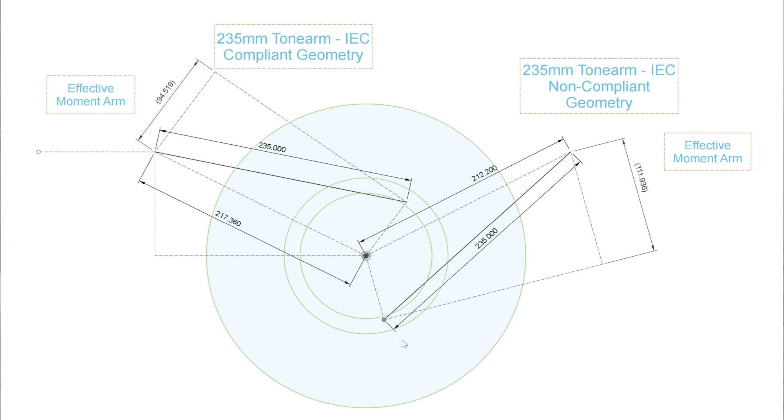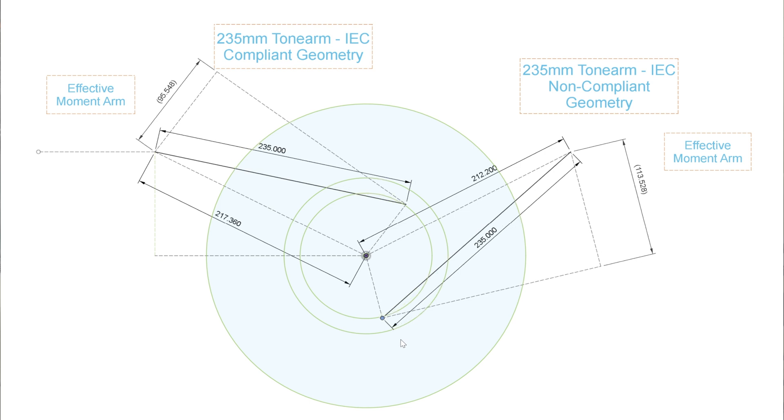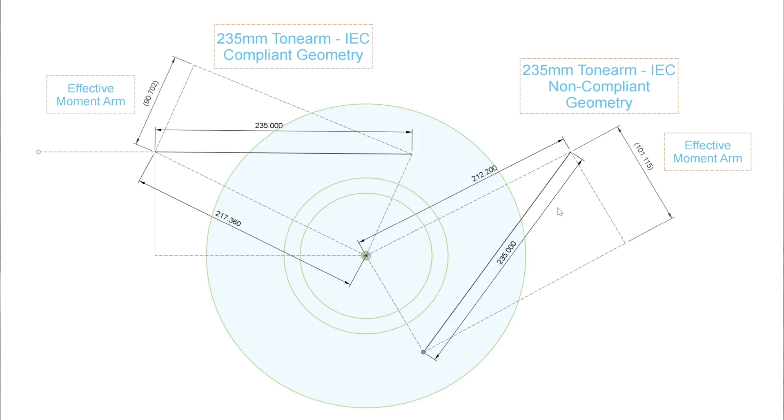If you use that same non-compliant tone arm and go to the IEC minimum, you'll see now we're looking at about 17, 18 almost percent increased skating force with the non-compliant tone arm.